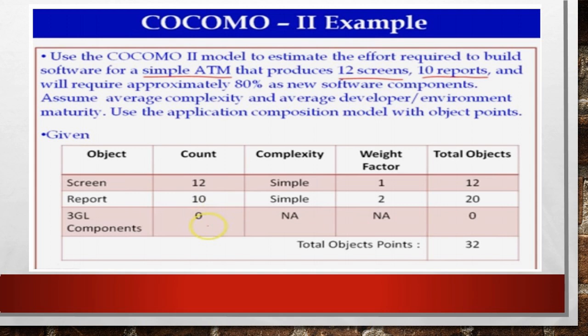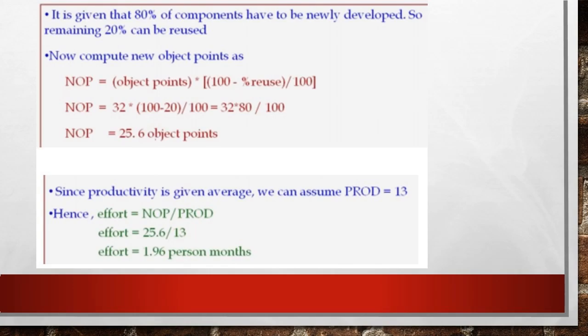Total objects are computed by multiplying the count with weighting factor. So total objects of screens is 12. Report object points are 10 into 2, which is 20. So total object point is 32. In the question it is given that it will require approximately 80% as new software components. So remaining 20% can be reused.